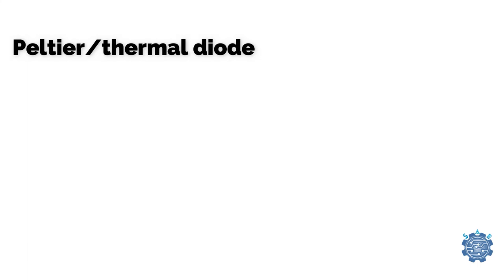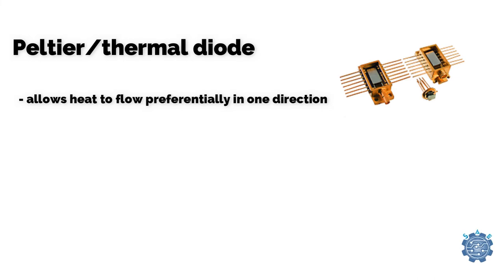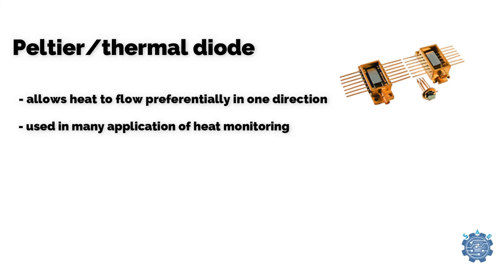Peltier, or thermal diode, is a type of diode which allows heat to flow preferentially in one direction. It is used in many applications of heat monitoring.